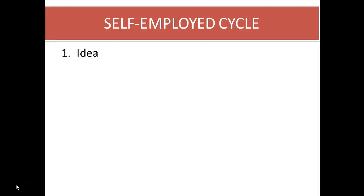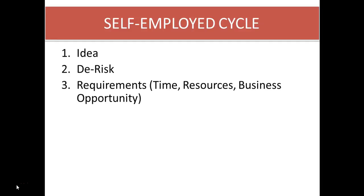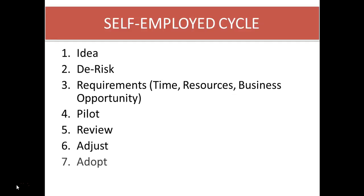There are seven key phases in the employee self-employed cycle. The first is that you need to have an idea — every business is an idea or opportunity. Then you need to de-risk your idea. The third phase is to identify the requirements for the idea to become a reality — what time is required, what resources are required, and what business opportunity exists. Then you run a pilot to see whether it works, you review that, you adjust, and then you adopt. So the seven steps are: idea, de-risk, identify requirements, run a pilot, review, adjust, and adopt.